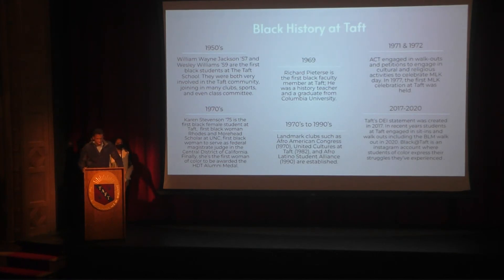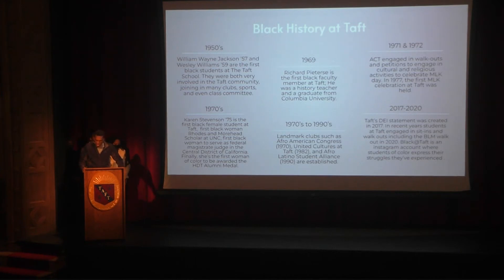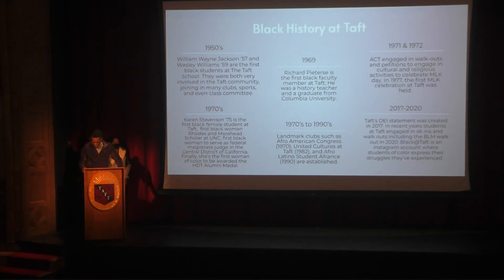After 1954, Taft's first African American black students came to Taft's campus: William Wayne Jackson, class of '57, who's from Bermuda, and Wesley Williams, class of 1959, who's from Washington, D.C. Both were heavily involved in the Taft community. William Wayne Jackson was a part of varsity soccer and Orioko's, and Wesley Williams was a part of class committee, Orioko's, and many other things. He also became Taft's first black trustee and first black HDT alumni medalist.